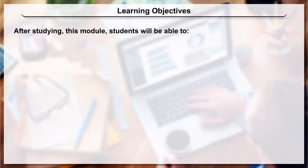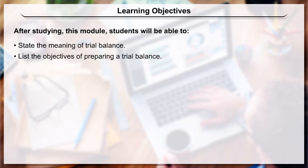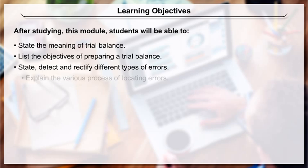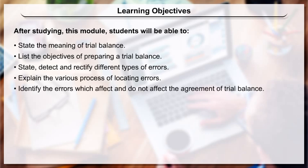Learning Objectives: After studying this module, students will be able to state the meaning of trial balance, list the objectives of preparing a trial balance, state, detect and rectify different types of errors, explain the various processes of locating errors, and identify the errors which affect and do not affect the agreement of trial balance.